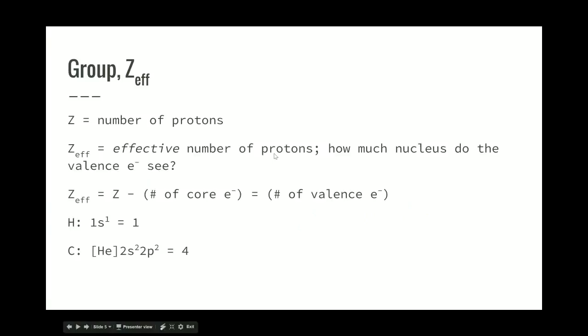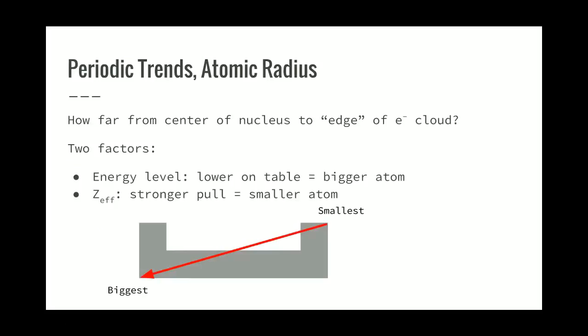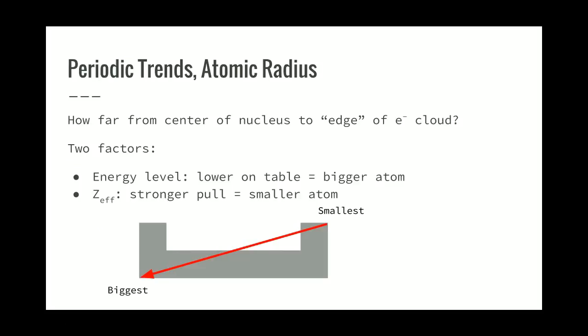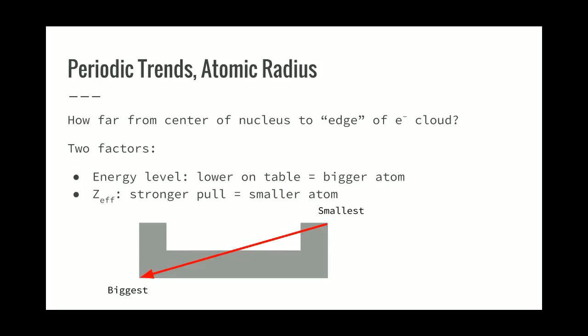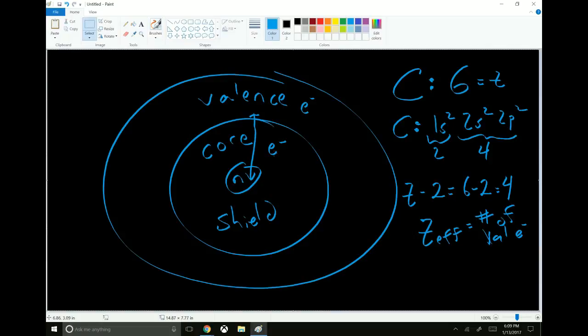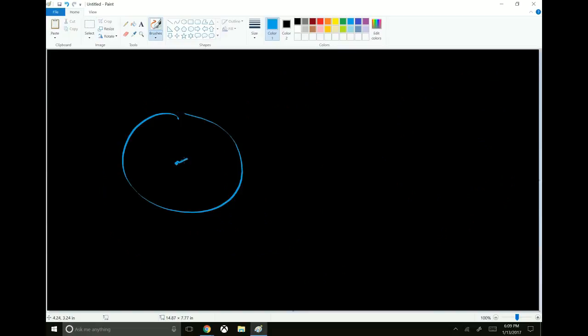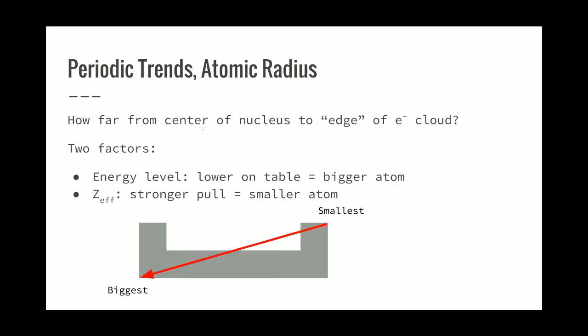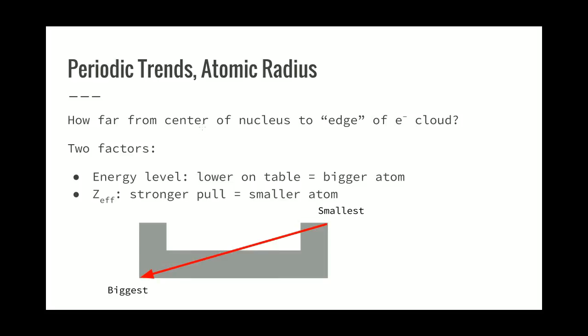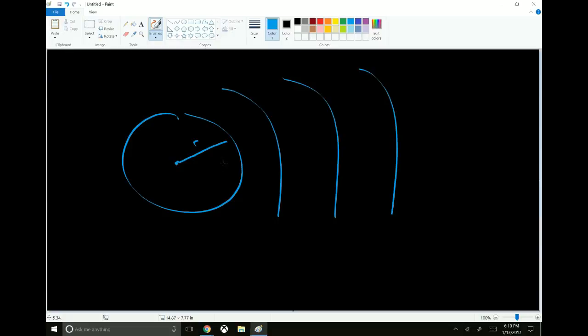Atomic radius is the distance from the center of the nucleus to the edge of the electron cloud. There are two things to keep in mind. The first is energy level. Every time you go up an energy level - from first to second, second to third, third to fourth - you're going further out from the center of the nucleus. So the first, second, third, fourth, they're always getting further away.